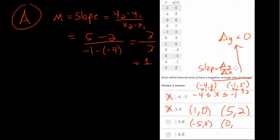For interval C: when you plug in negative 5, the y value is 0, and when you plug in 0, the y value is 3. This one is also positive because the x values go from negative 5 to 0 — they increase — and the y values go from 0 to 3 — they increase as well. So that's another positive average rate of change.